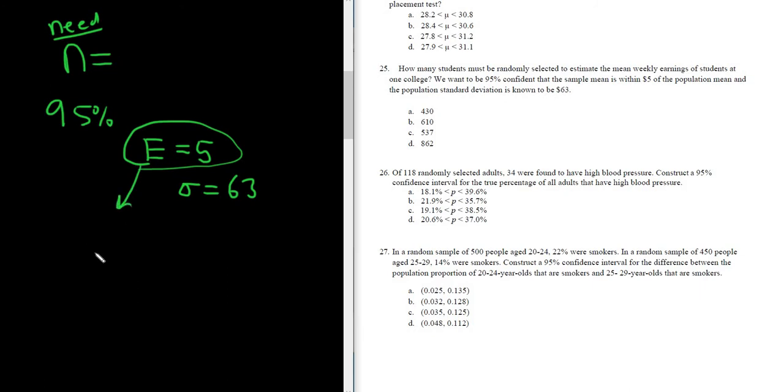Now once we have this, what we do with it is we find the width. And to find the width, we just multiply it by 2 always. So 2 times 5 is equal to 10.